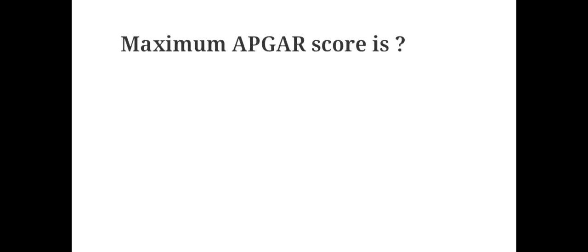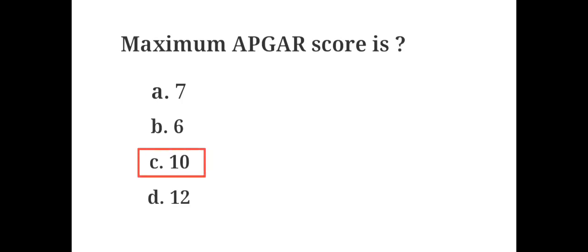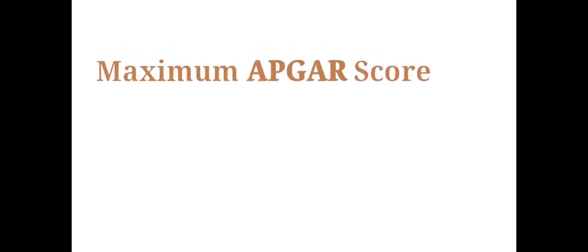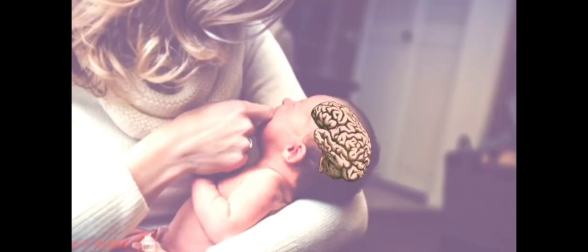Maximum APGAR score is: A. 7, B. 6, C. 10, D. 12. The answer is C. 10. The maximum APGAR score is 10. APGAR is an indirect measure of the health of a newborn at birth, including any damage to the brain around birth.